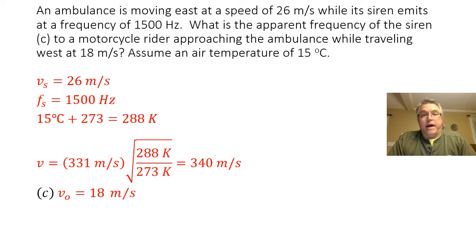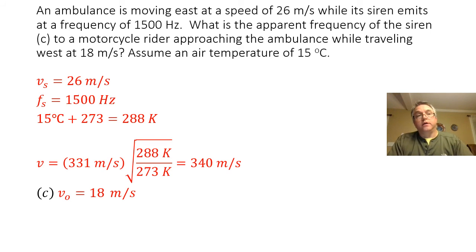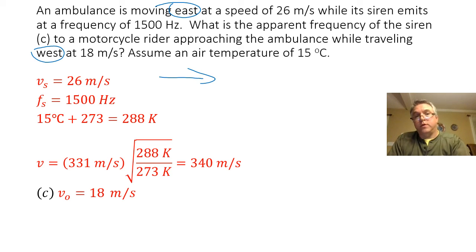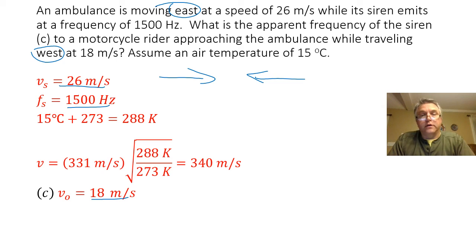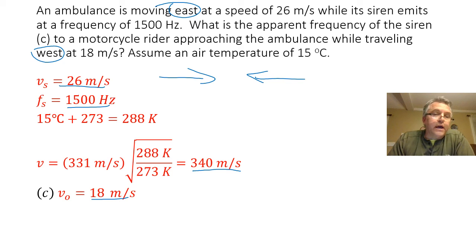Finally, part C asks: what is the apparent frequency of the siren to a motorcycle rider approaching the ambulance while traveling west at 18 meters per second? The ambulance is moving east and the motorcycle is moving west — they are both approaching one another, so both the source (the ambulance) and the motorcycle rider are going to have positive velocities. The frequency of the source is still 1500 hertz, the air temperature is still 15 degrees Celsius, so the velocity of the sound wave is still 340 meters per second. The velocity of my source is positive 26 meters per second and the velocity of my observer is positive 18 meters per second.